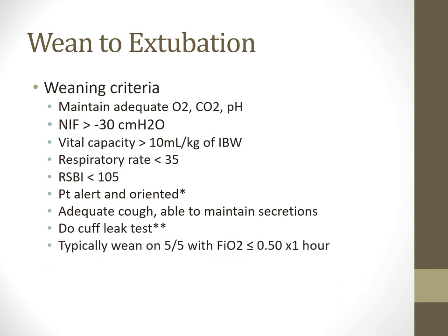Usually we'll put the ventilator on a CPAP of 5 or a PEEP of 5 and pressure support of 5 — though this can change from hospital to hospital. That pressure of 5 just helps get gas through the ET tube, and when they trigger a breath on their own, a little pressure support helps overcome the resistance of breathing through the tube. It's not enough to deliver a full complete breath, just enough to help overcome breathing through a straw. The FiO2 should be less than 0.5, and we want to make sure they're weaned for a good half hour to an hour.